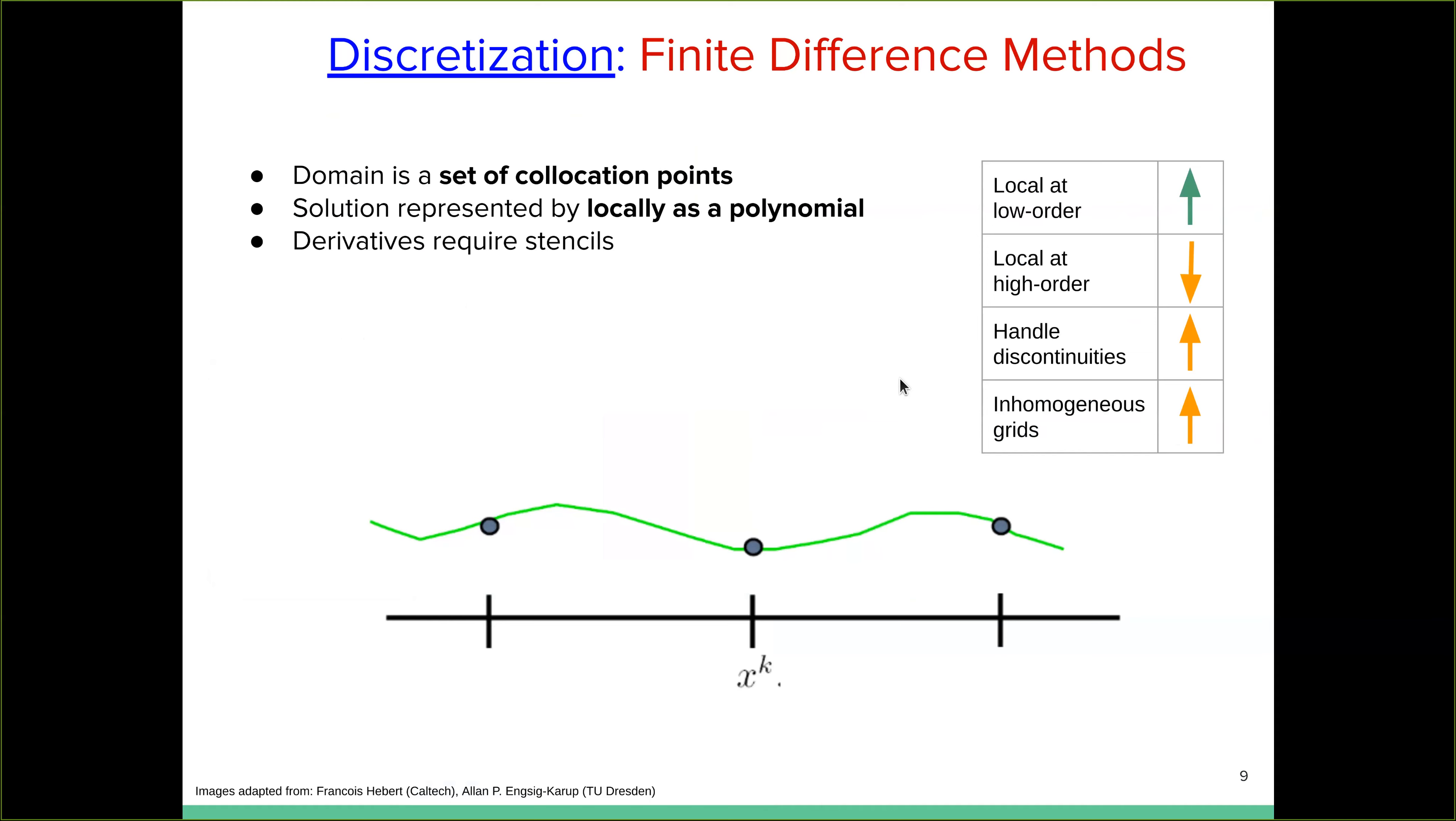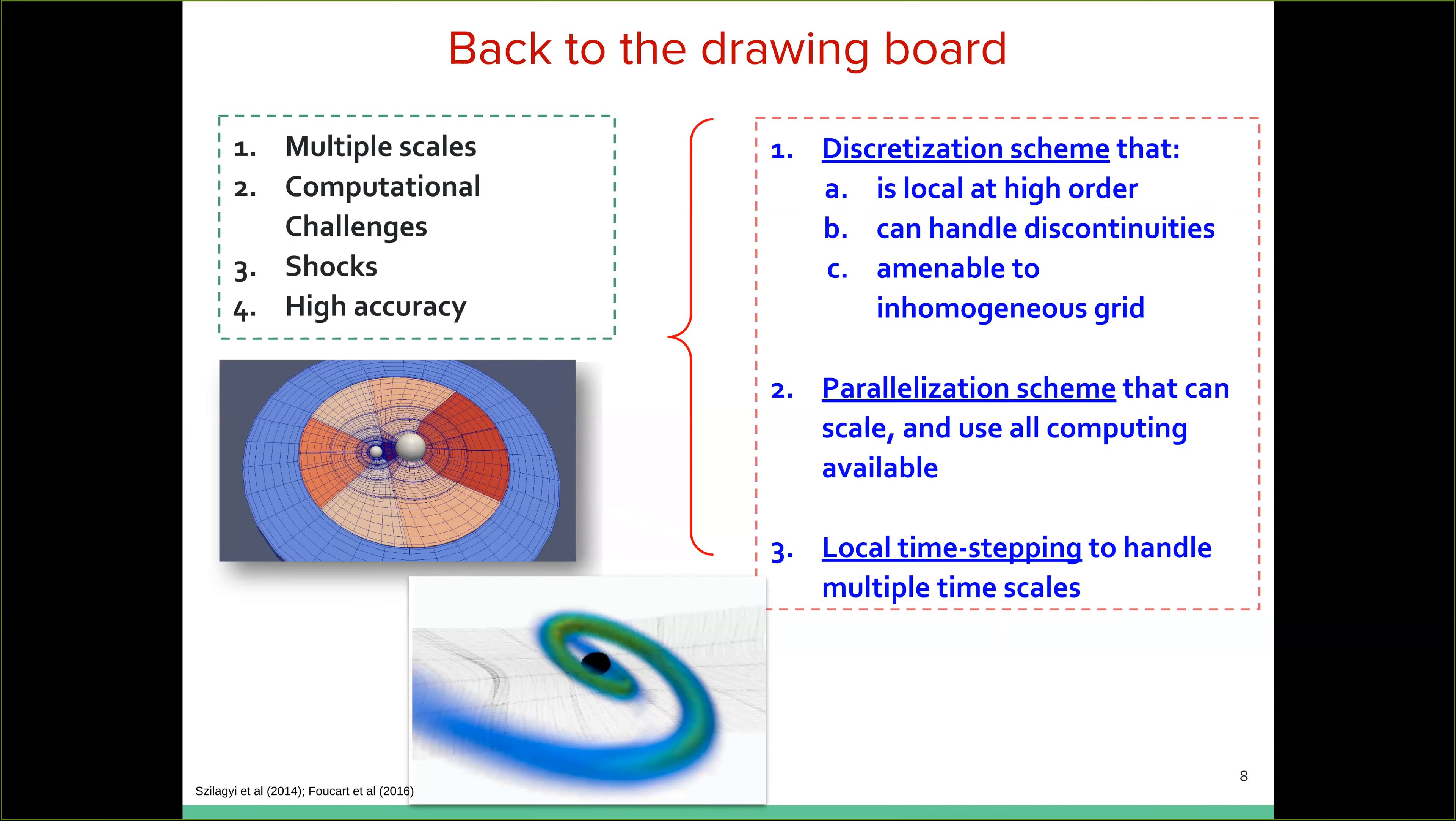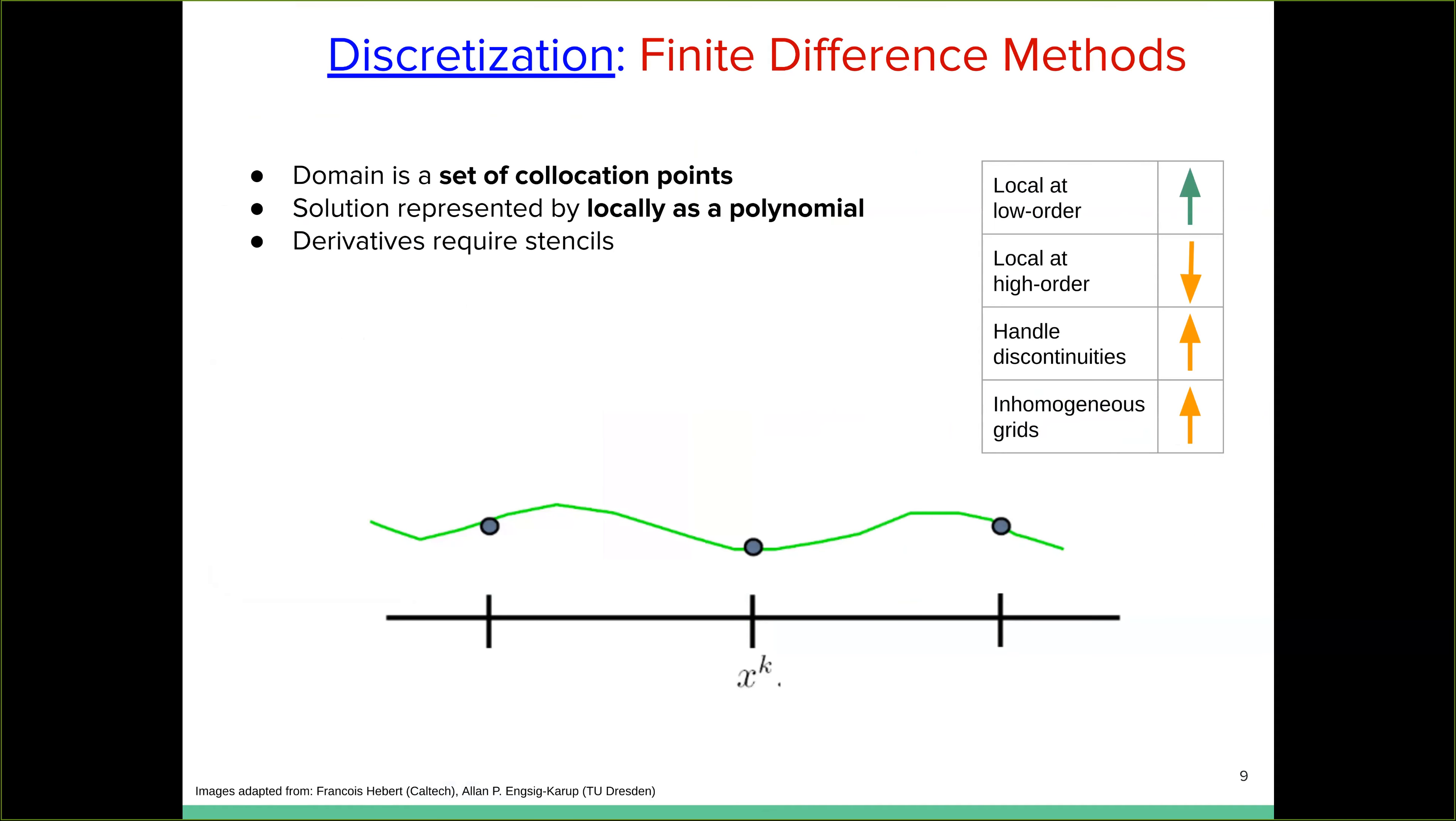So I'll be talking about each of these three things in order. So let's start, think about discretization first, right? So the oldest form of discretization methods is the finite difference method where you have, you say a solution and it's represented by its value at a few collocation points and the domain is itself a set, the set of these points. Now the solution again is, can be thought of as being represented locally by a polynomial interpolator.